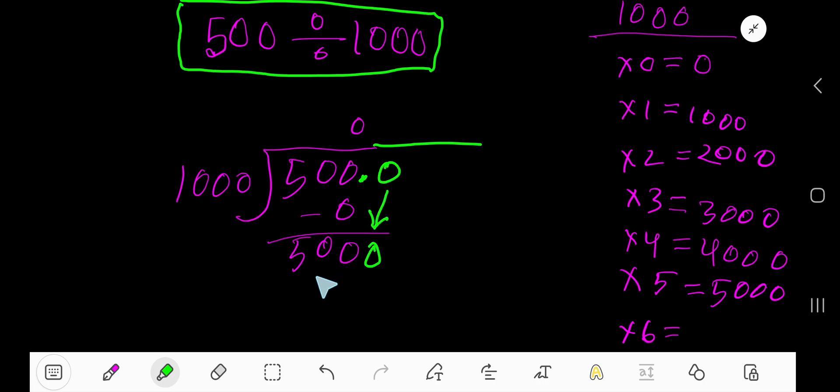Before the zero there is a decimal point. The decimal point must come to the quotient directly. So 1000 goes into 5000 how many times? Five times. Five here, five times 1000 is 5000. If you subtract, then you are getting zero. That is 0.5 is the answer.